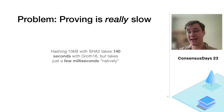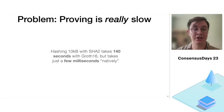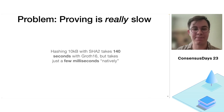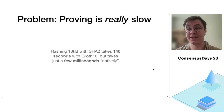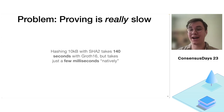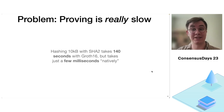Taking the example of proving a pre-image of a hash — say the pre-image is 10 kilobytes — on a commodity laptop using a pretty standard ZK-SNARK called Groth16, it will take almost two minutes to prove, while just running the hash locally only takes a few milliseconds. So this is a problem.